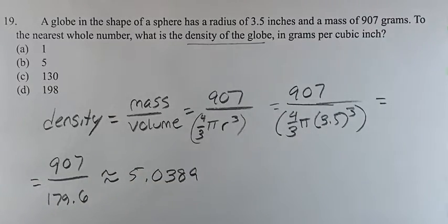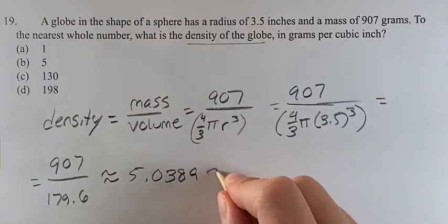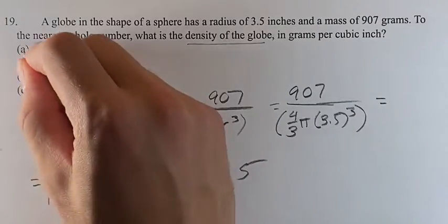Roughly. To the nearest whole number, it's 5, which means our answer is going to be b.